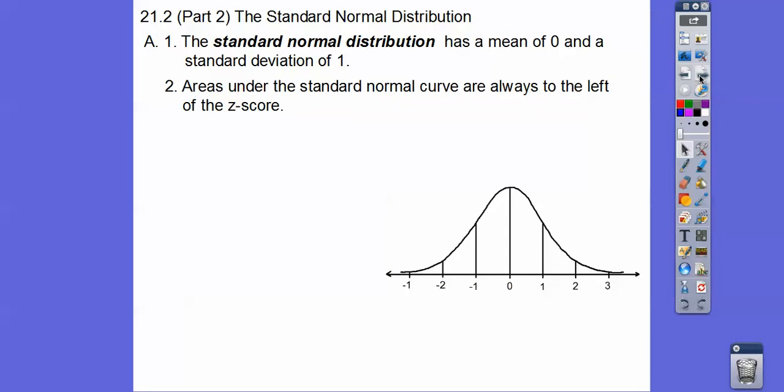All right, so areas under our standard normal curve are always to the left of the z-score. So, for example, right here, this represents 84% if we added all of these up. If I said a z-score of one, then we'd have this standard deviation would be all of the areas to the left. And you don't have to add them all up. Just right here at the zero, there's 50% on that side, 50% on that side. So we can add the 50% and the 34% and still get 84%.